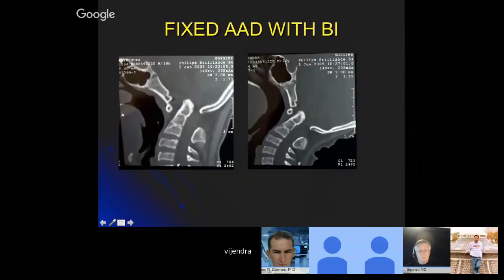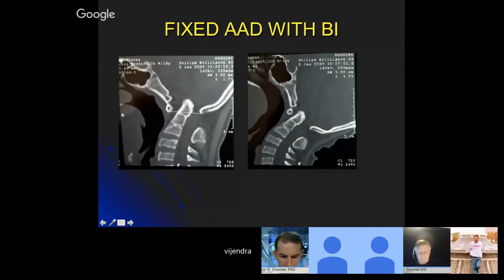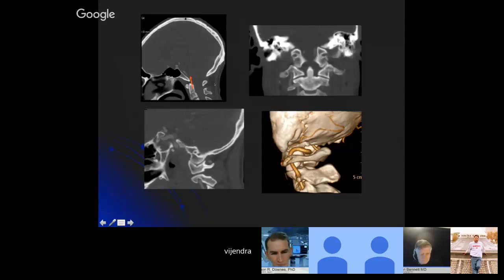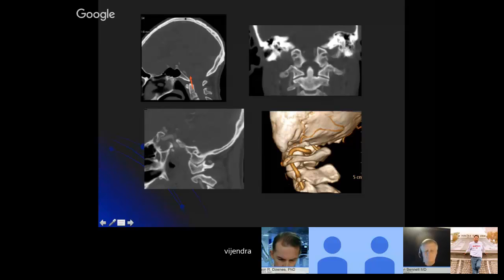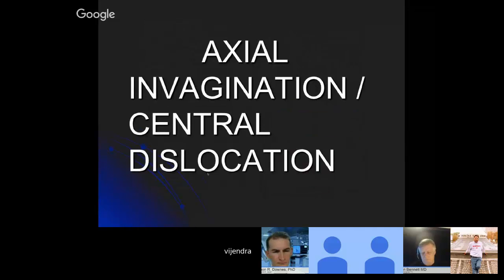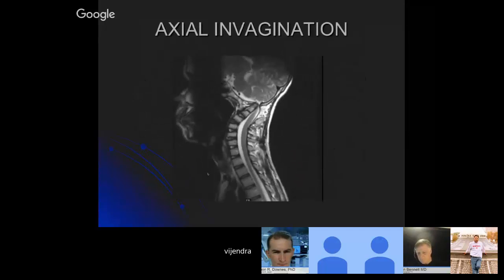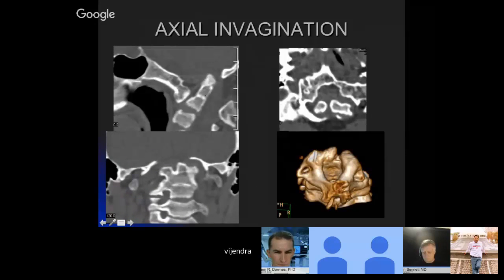Normally a very common picture in India is when there is a dislocation and the odontoid is going up — people generally call this fixed atlanto-axial dislocation with basilar invagination. But what I call it is axial invagination or central dislocation, where C2 moves up. The atlanto-axial joint will also show some dislocation abnormality. In this MRI so much of axis has gone up — this is axial invagination. In this CT scan C2 has gone completely inside — I call it axial invagination.